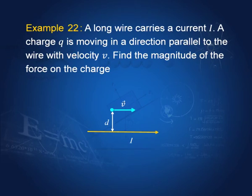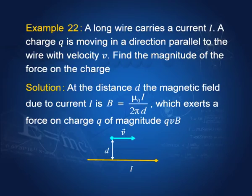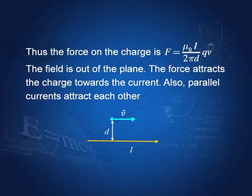That is the formal definition of an ampere. Let us take an example: a long wire carries a current I, and a charge Q is moving parallel to the wire with velocity V. Find the magnitude of the force on the charge. Remember that a moving charge is equivalent to a current, and since these currents are parallel, there will be attraction. You can find the attraction using the formula, and this particle would be attracted by the current.